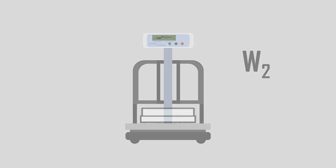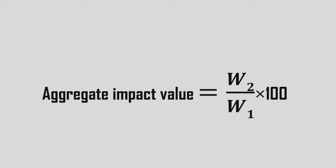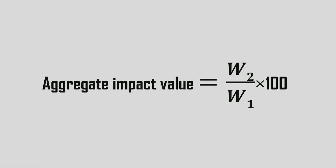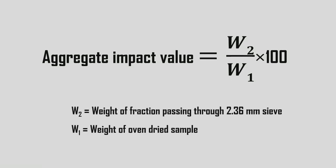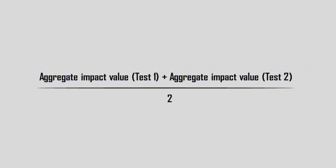The ratio of the weight of fines formed to the total sample weight should be expressed as a percentage using the equation. Aggregate impact value is equal to W2 divided by W1 into 100. Where W2 is the weight of fraction passing through 2.36 mm sieve, W1 is the weight of oven dried sample. The same process is repeated and the aggregate impact value is taken as the average of two tests.